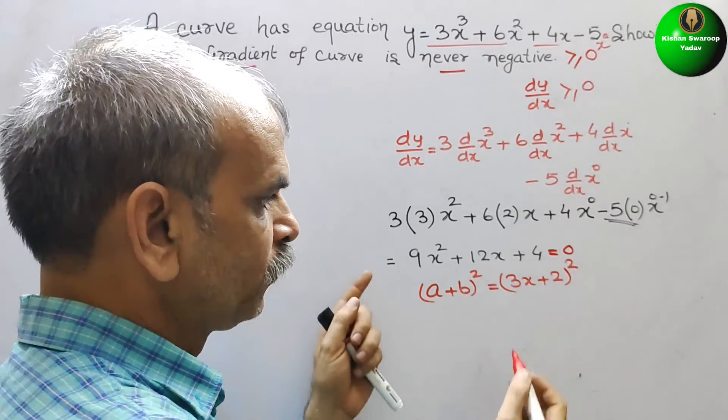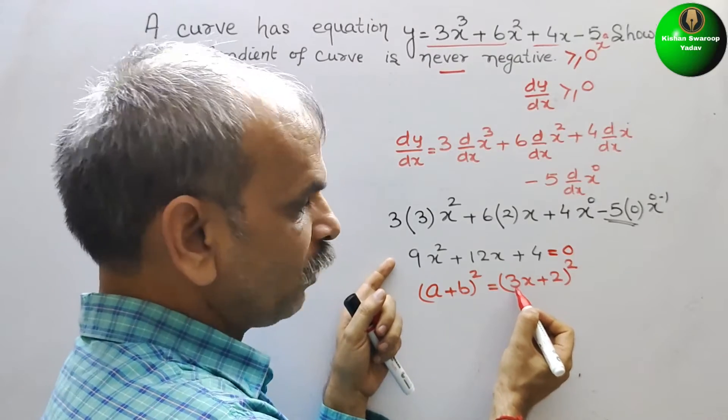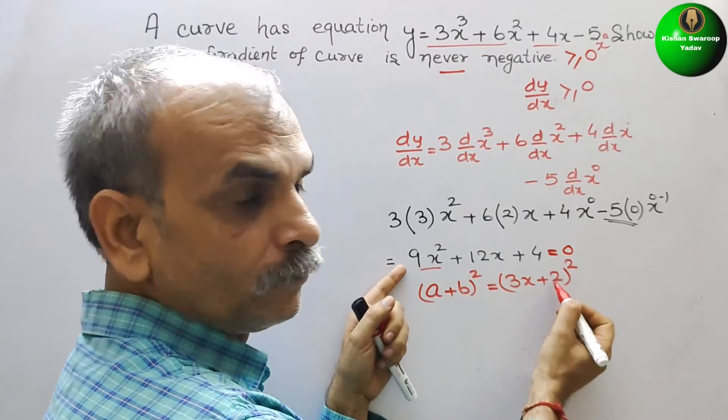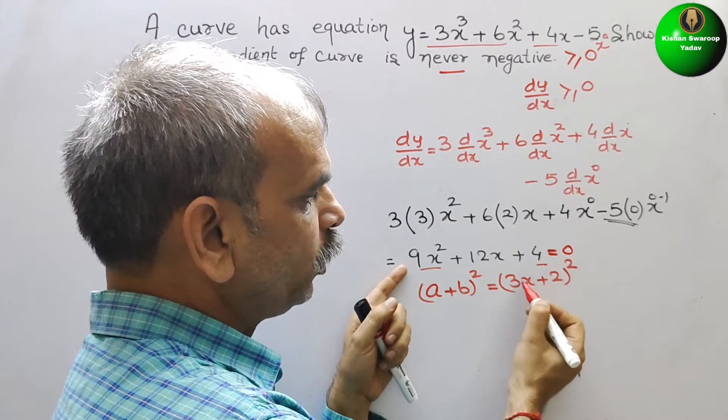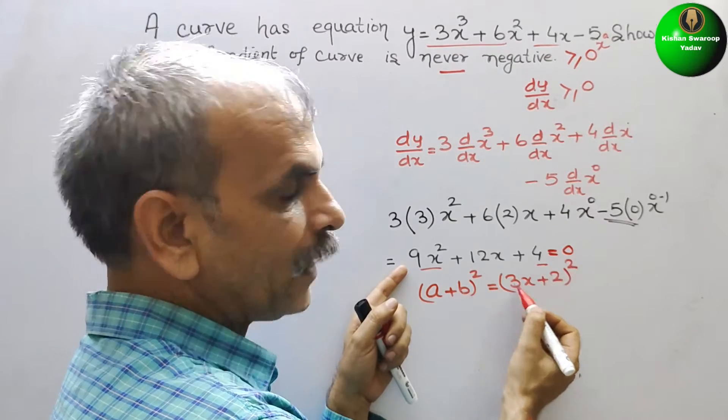So now we will check it. That is a², that is 9x². And this is 4, and this will be 2×3×2, so that means it is 12.